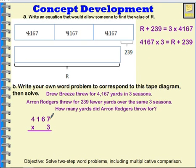3 times 7 is 21, I'll put my 2 here and my 1 there. 3 times 6 is 18 plus 2 more is 20. I'll put 0 here and a 2 there. 3 times 1 is 3 plus 2 more is 5, and 3 times 4 is 12. So the total that Drew Brees threw for was 12,501.